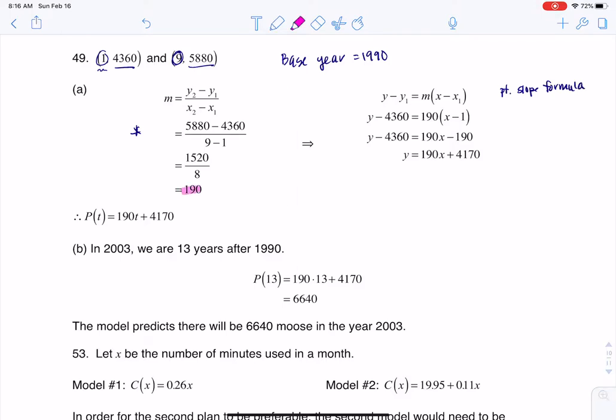So you see me taking my slope here of 190 and plugging it in for M, being 190. Then you see me taking any of these ordered pairs. I always pick the ones with the smaller numbers, so I'm going to take 1 and 4,360,